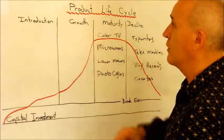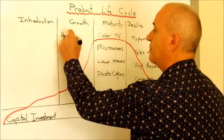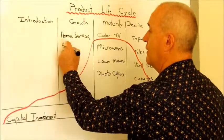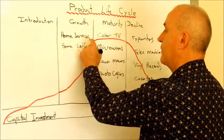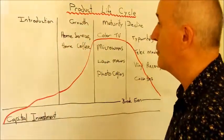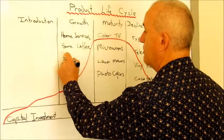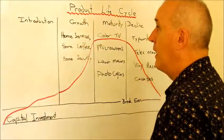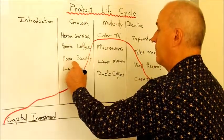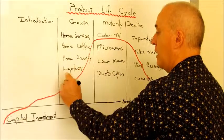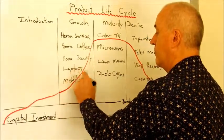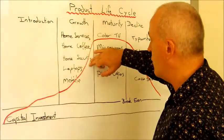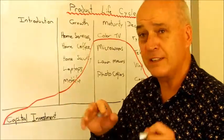Some of the growth industries that you've got are home services, home coffee machines. Everybody seems to have a home coffee machine nowadays. Home security, laptops, mobile phones. These are certainly in the growth phase, and that's where there's very strong take-up. But they started from somewhere.